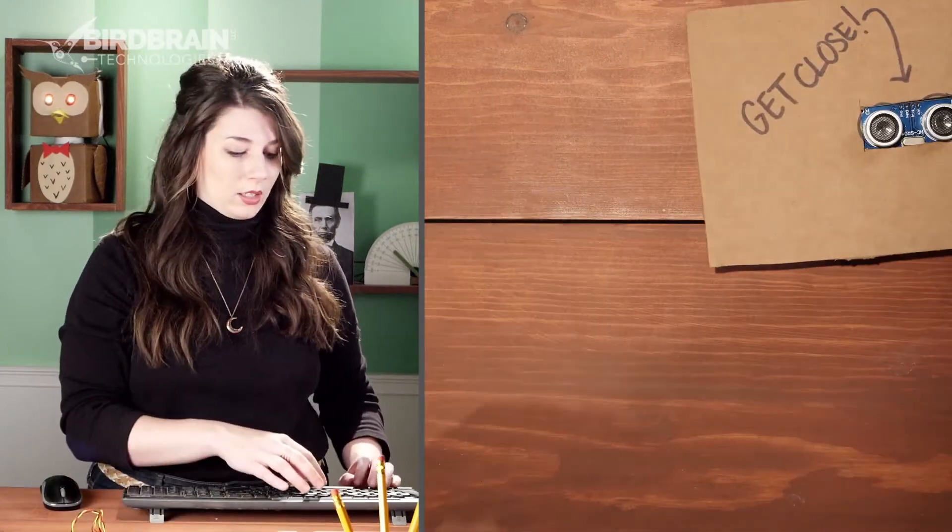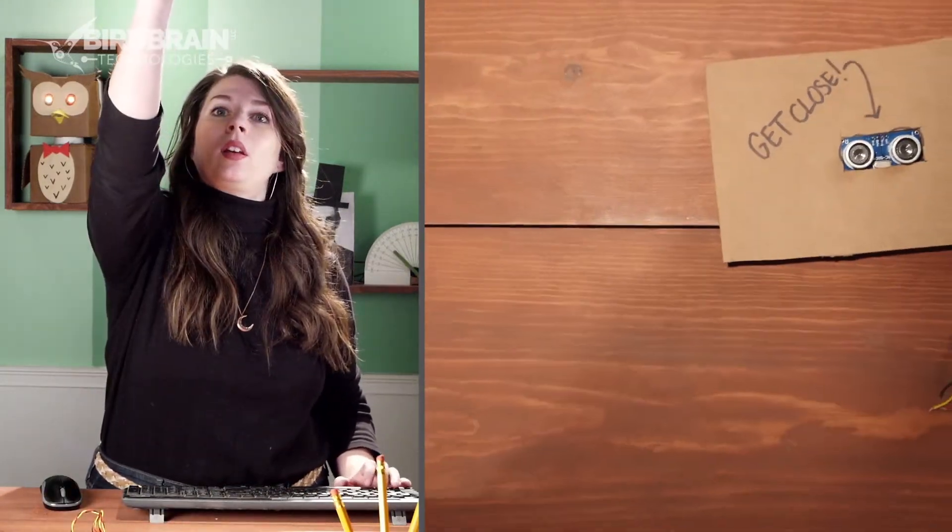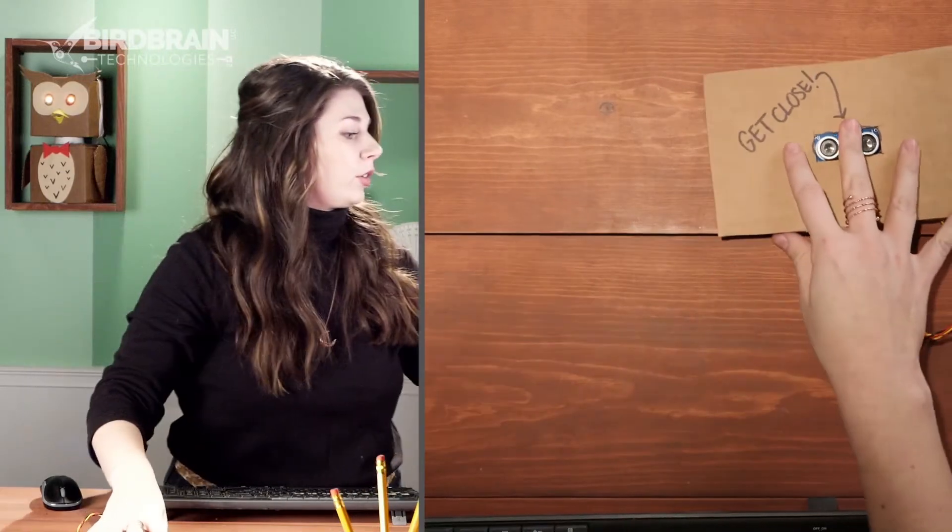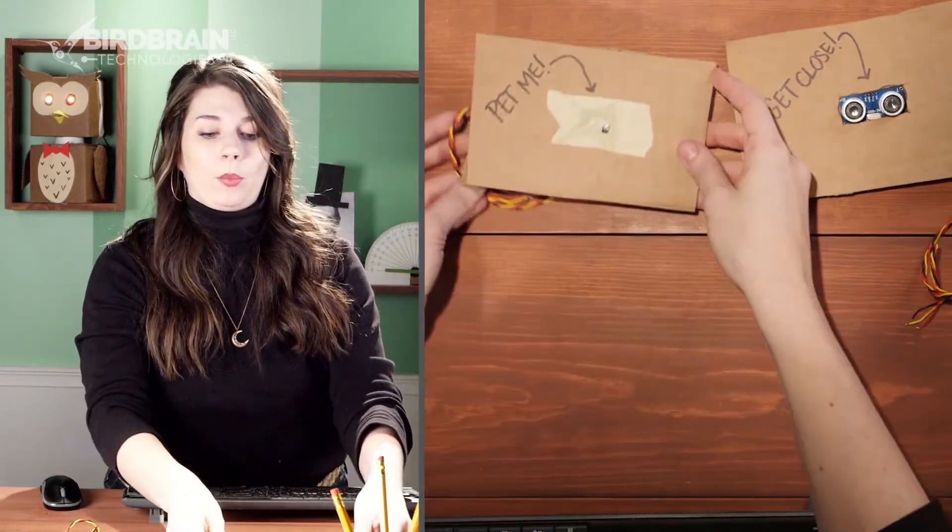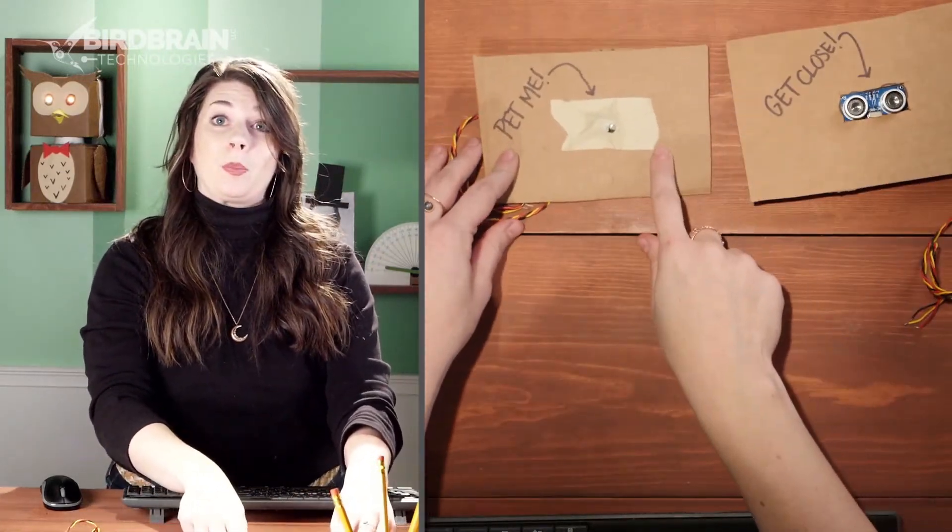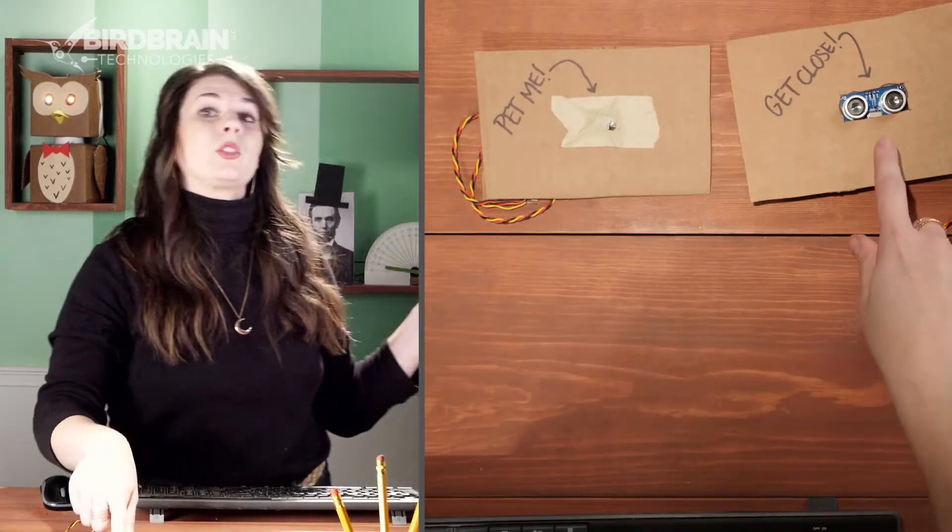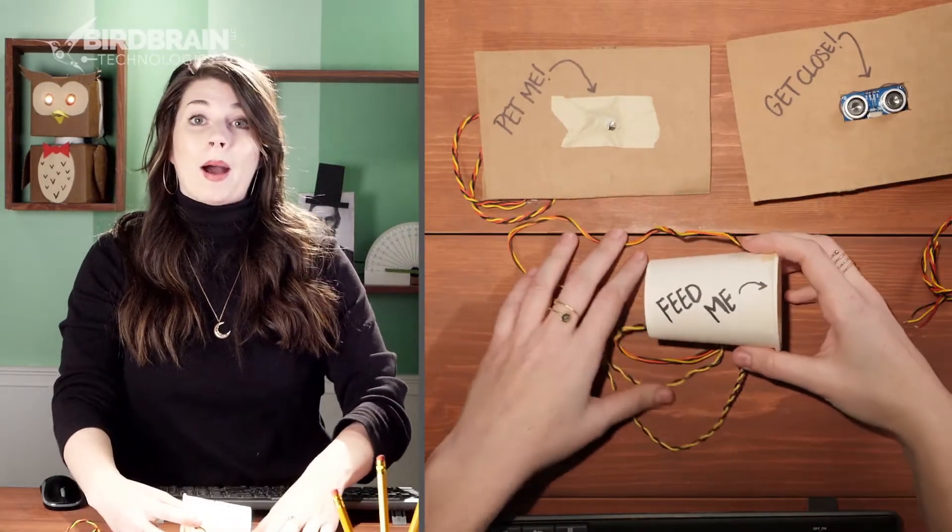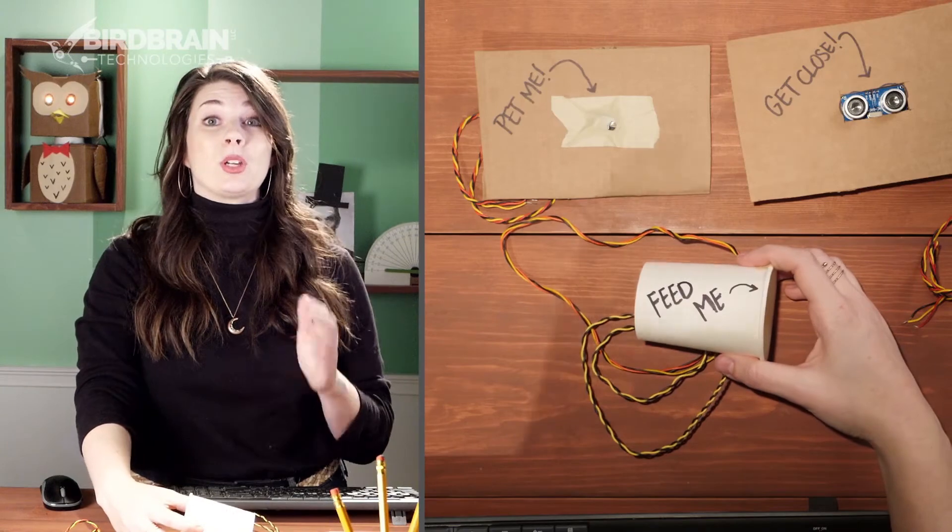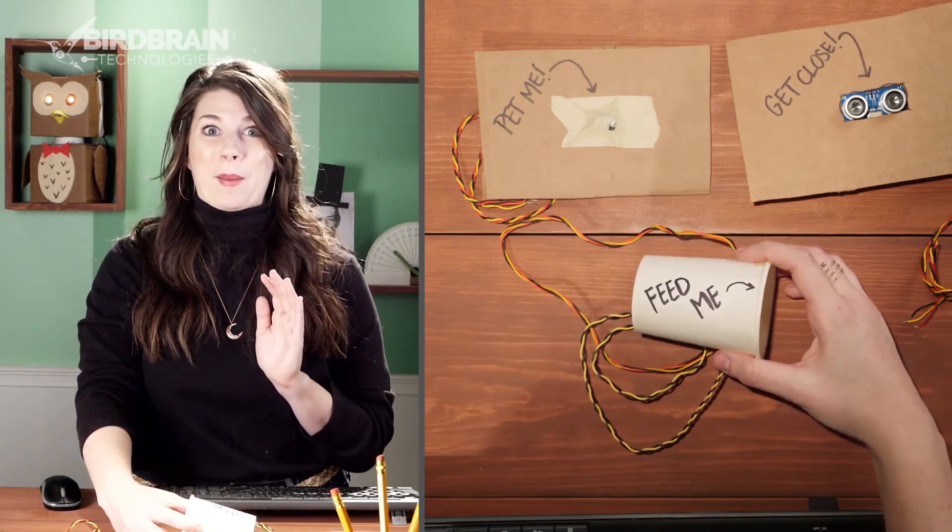So with these three examples, I'll put them all together so you can see them each. You could program a robot that responds when you pet it, a robot that responds when you get close to it, or a robot that responds when you feed it, and you can make some really cool robot petting zoo animals.